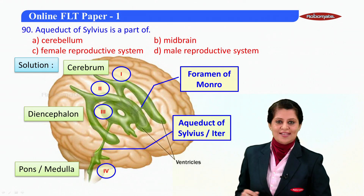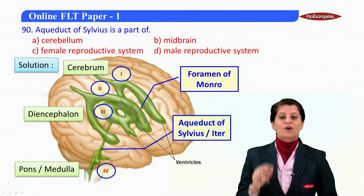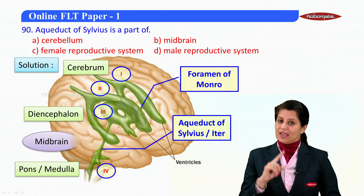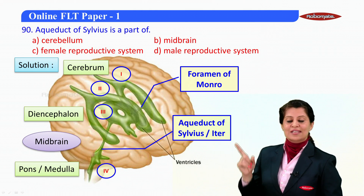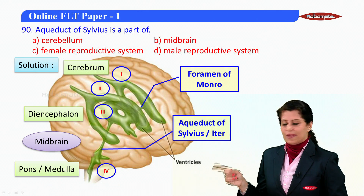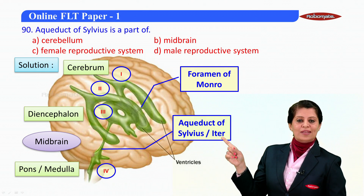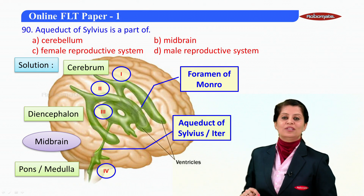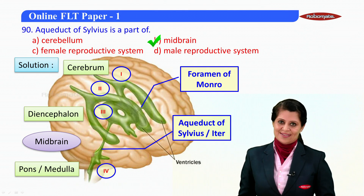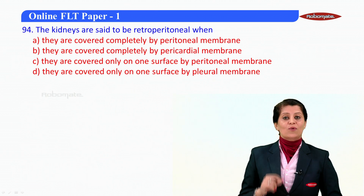The third ventricle and fourth ventricle have a long distance between them. They are connected by a canal known as the aqueduct of Silvius, or simply called iter. Since the diencephalon is the forebrain and pons and medulla are the hindbrain, the aqueduct of Silvius passes through the midbrain — so the answer is midbrain.